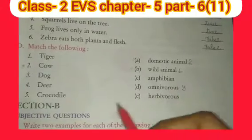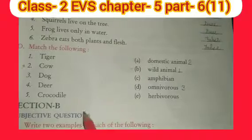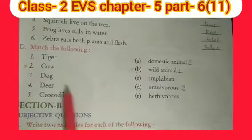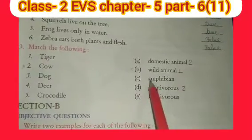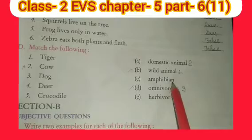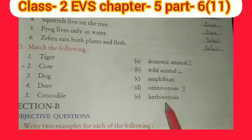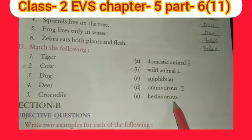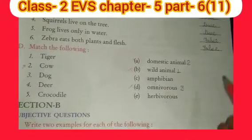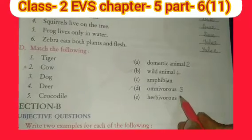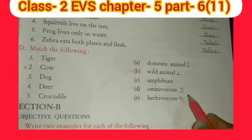Now fourth comes: deer. Deer from the options — what is it? Amphibian or herbivorous? The answer is herbivorous. Write that for number four.